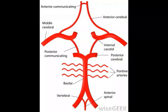The basal cistern, better known as the interpeduncular cistern, is one of the three major openings of the brain's subarachnoid space. This is the cavity between the arachnoid and pia mater that accounts for two of the three membranes covering the central nervous system. The other two cisterns in this region of the brain are the cisterna magna and the pontine cistern.